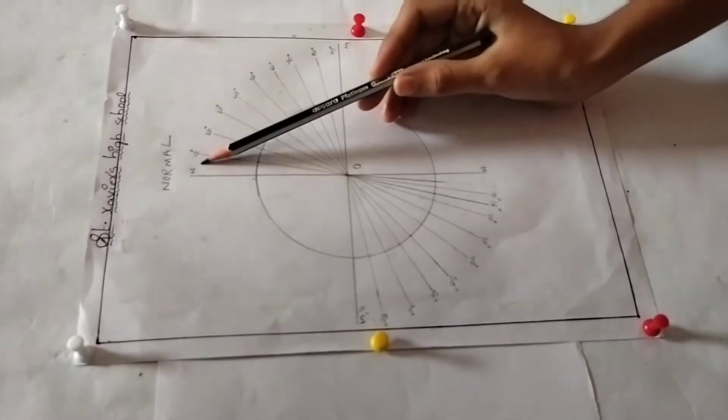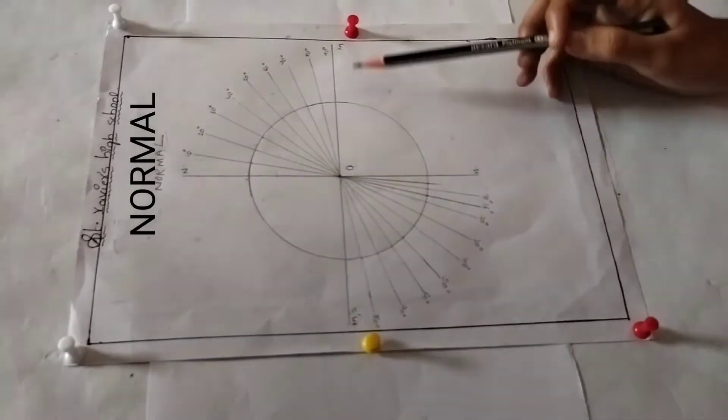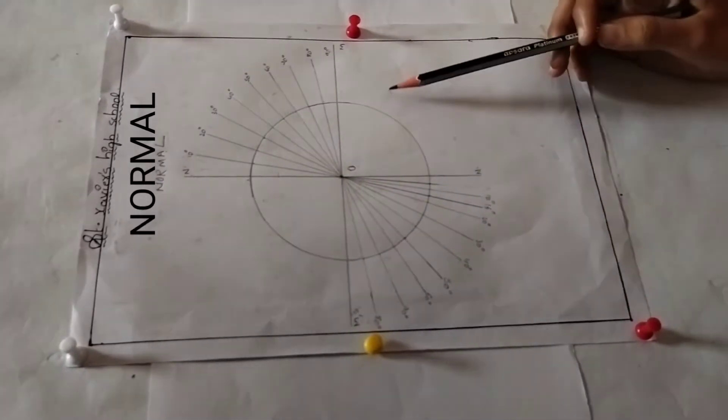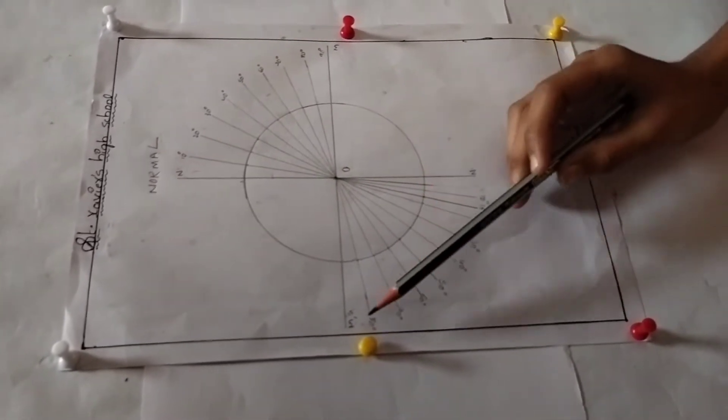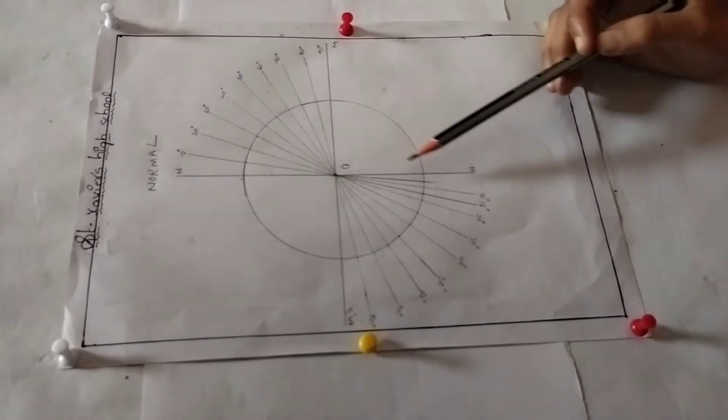Mark the line NN, which is normal to another line marked as MM. MM represents the line drawn along the interface of two media, and NN represents the normal drawn to this line at O.